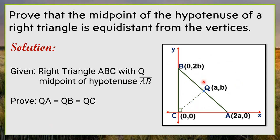In this illustration, I have right triangle ABC wherein Q is the midpoint, and the hypotenuse is segment AB because segment AB is the opposite side of our right angle. We are going to prove that the midpoint of the hypotenuse is equidistant from the vertices A, B, and C. Since these are the vertices and our midpoint is Q, that means we are going to prove that QA, QB, and QC are equidistant — they have the same length or distance.